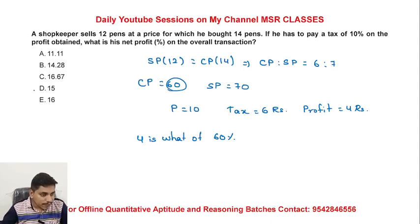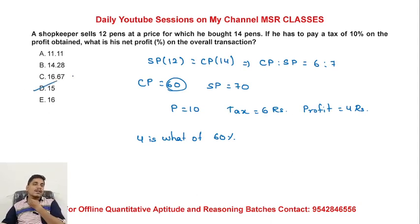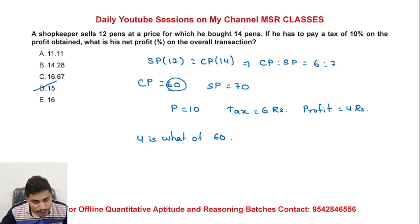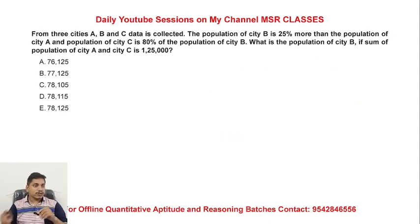Option B is the final answer for this question. 60 rupees may be the 100 pence base. Cost price is done. Next question.